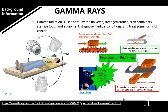Gamma radiation is also used to diagnose medical conditions and treat some forms of cancer. According to blogspot.com, we have four uses of radiation: gamma radiation kills bacteria in food and increases shelf life; short half-life gamma emitters are used to detect leaks in pipes; a rotating source of gamma rays is used in radiotherapy; and beta radiation is used to ensure sheets of paper or metal are the correct thickness.